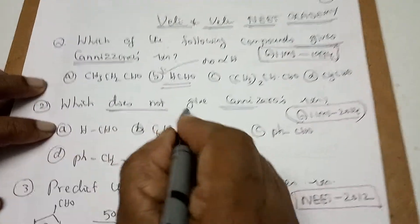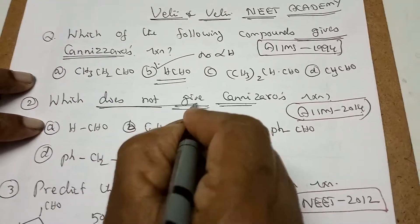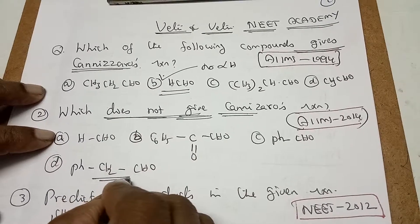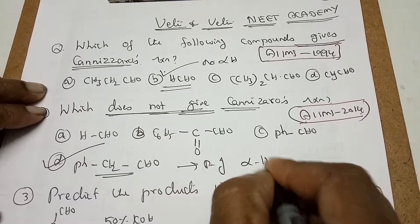Second question: which does not give Cannizzaro? AIIMS 2014. Here does not give as answer. That means what? Which is having alpha hydrogen. This is not answering because of presence of alpha hydrogen.